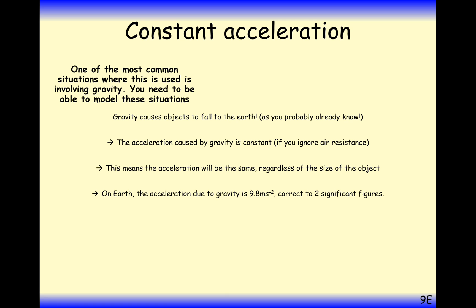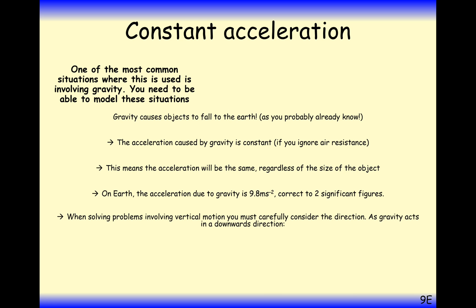On Earth, acceleration due to gravity is 9.8. The decimal does carry on, but for A-level maths — particularly the mechanics module — we're just going to use 9.8 to two significant figures. Questions can sometimes tell you to use the value 10, and at physics A-level you'd use 9.81, but in maths A-level, 9.8 is what we use generally.